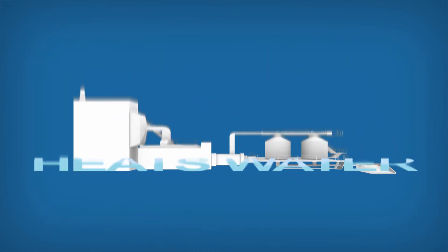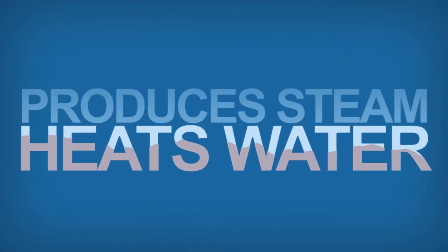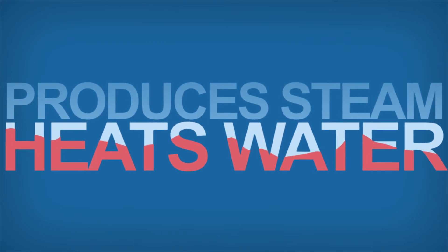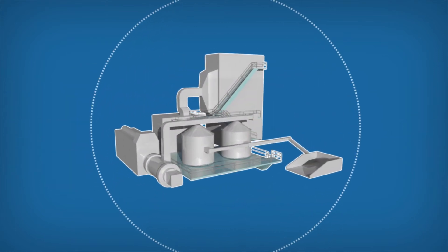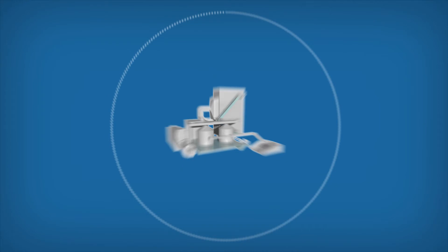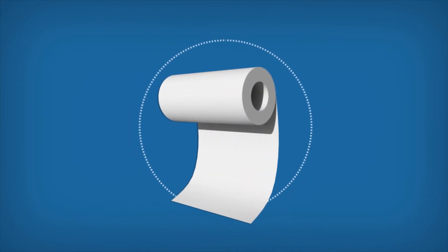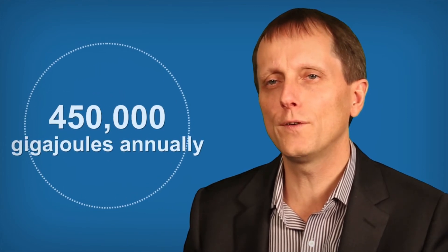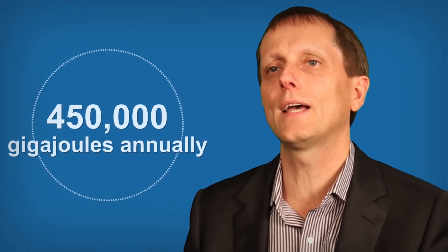This combustion process heats water and produces steam. The steam is used for multiple purposes around the plant but mostly to dry the tissue web as it is being made. The technology produces more than 40,000 pounds per hour of steam and displaces approximately 450,000 gigajoules of natural gas annually.